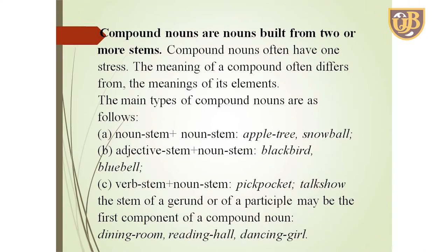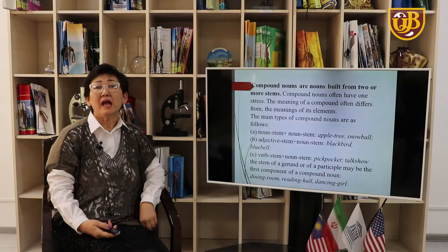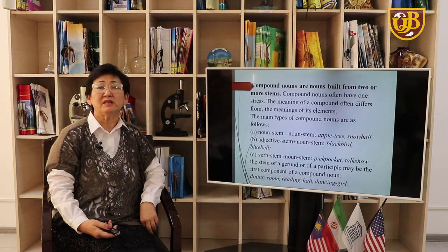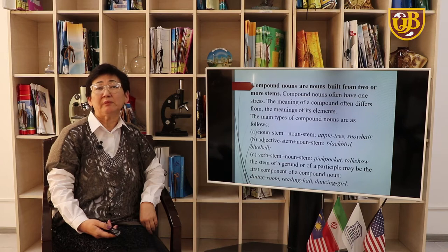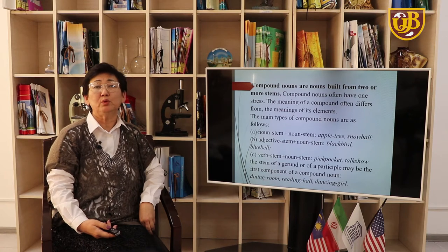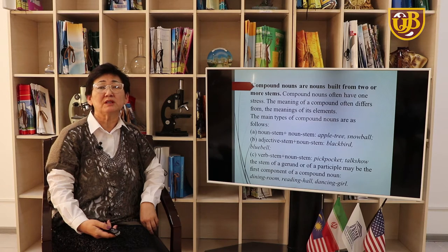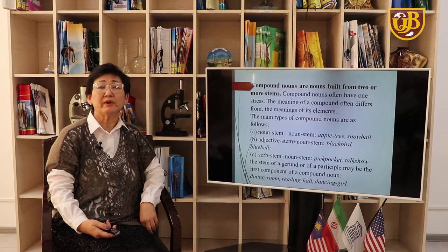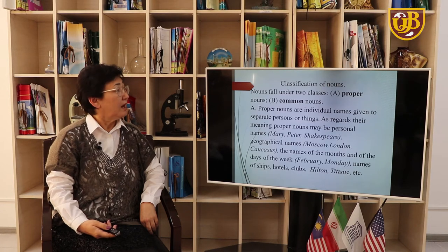Compound nouns are nouns built from two or more stems. They often have one stress. The meaning of a compound often differs from the meaning of its elements. The main types of compound nouns are: noun stem + noun stem — apple tree, snowball, girlfriend, pen friend; adjective stem + noun stem — blackbird, blackboard, bluebell, blueberry; verb stem + noun stem — pickpocket. The stem of a gerund or participle may also be the first component — dining room, reading room, dancing hall.